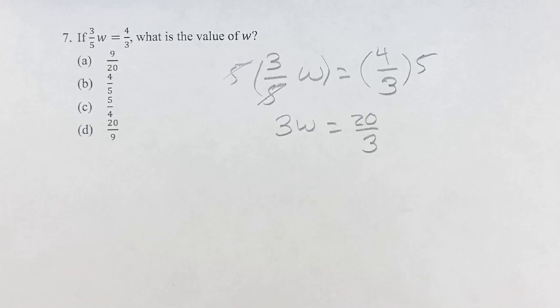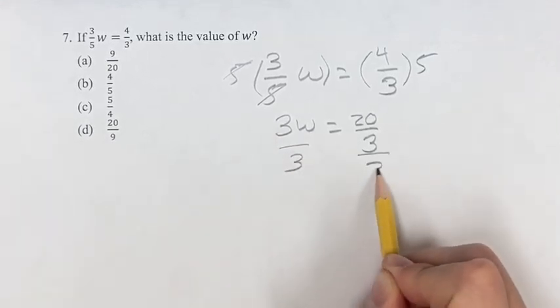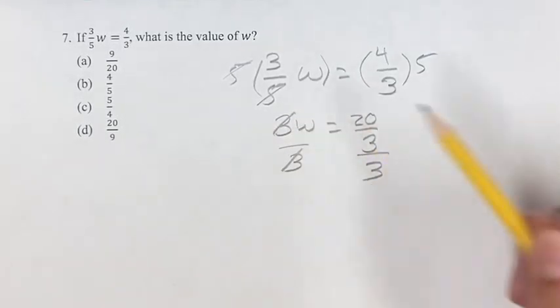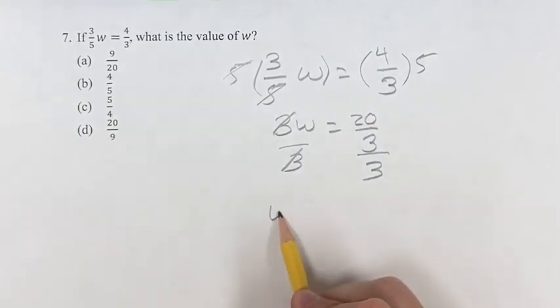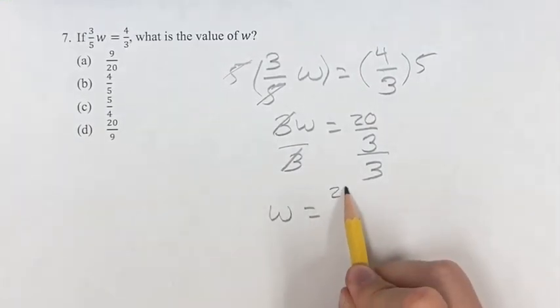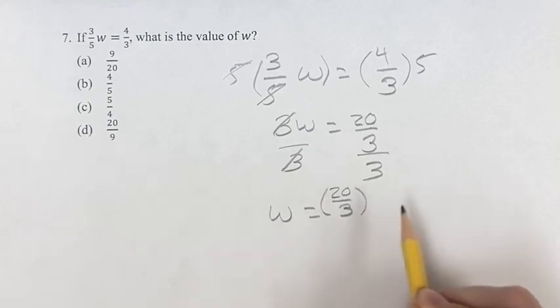Again, we want to get w on its own. So if we divide this by three and do this by three, these threes cancel out and we get w is equal to 20 over three divided by three.